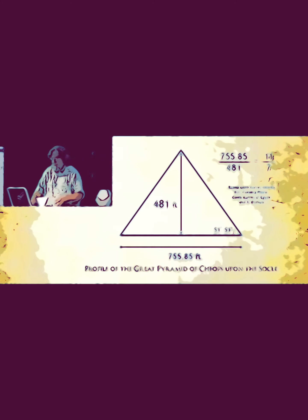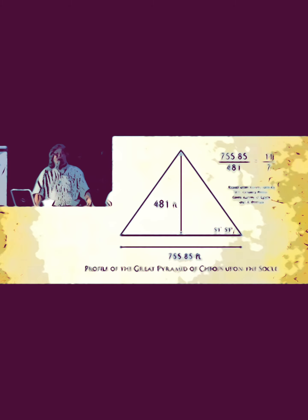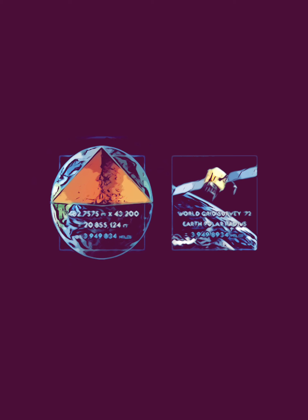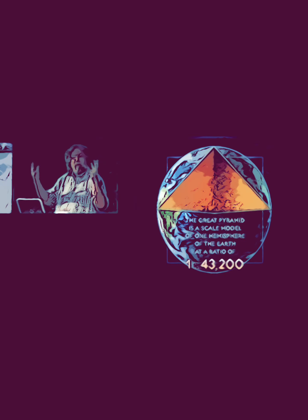Here's the Great Pyramid profile with a 51 degree 51 minute angle, 481 feet in height not including the socle, base 755.85 feet. When measured, it's almost exactly 11 over 7: 3,949.83 miles. The difference between the pyramid's standard polar radius and the world grid system is only 313 feet. Essentially, the pyramid is a scale model of Earth's northern hemisphere at a scale of 43,200 to 1.